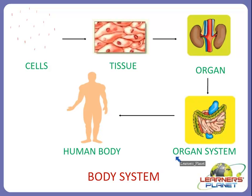Every single person has a skeleton which is made up of many bones. These bones give our body a structure, let us move in many ways, and also protect our internal organs. Our body system is a very complex organization. Now we will discuss about some of the very common body systems or organ systems which we have studied in previous grades.